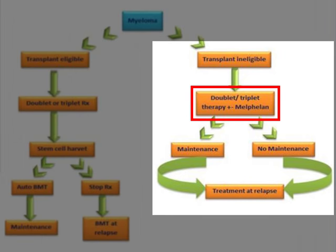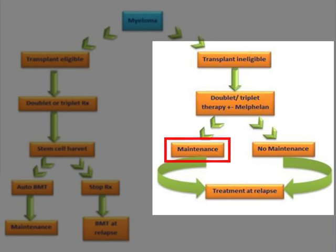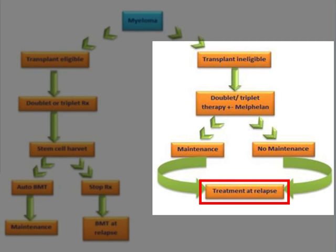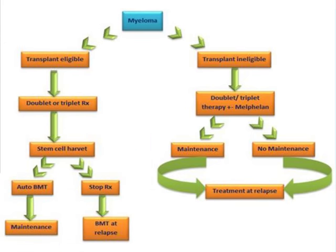Transplant ineligible patients do not differ greatly in how their disease is treated initially. The crucial difference is that transplant ineligible patients are allowed to have melphalan, which is an alkylator but more importantly a stem cell toxin — administration of melphalan would make future stem cell harvest very difficult. After completion of treatment, patients may opt to have maintenance or no maintenance with a novel agent. Most patients at present will relapse and need second-line treatment. Myeloma is not curable in most patients except through allogeneic bone marrow transplantation, but is very eminently treatable.